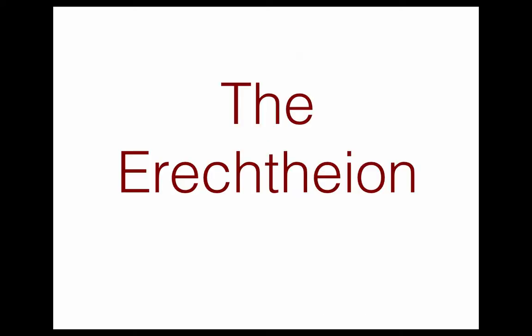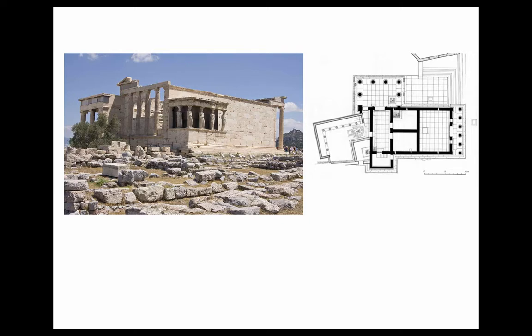Another building we have to know from the Acropolis is the Erechtheion. Art historians try to figure out what the hell it is — why they kept adding on to it, why it's so weird, why it's not like a Greek temple. We'll just leave it that it's strange. They kept adding on to it; we have this porch here of caryatids. A caryatid is a column in the shape of a human being, usually women — so these are women holding up the roof.